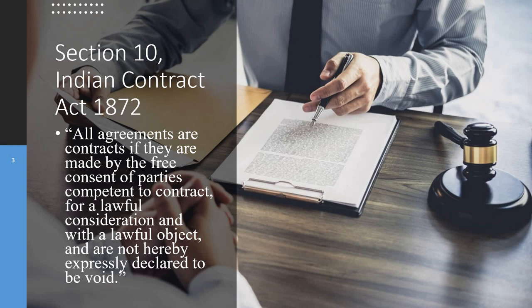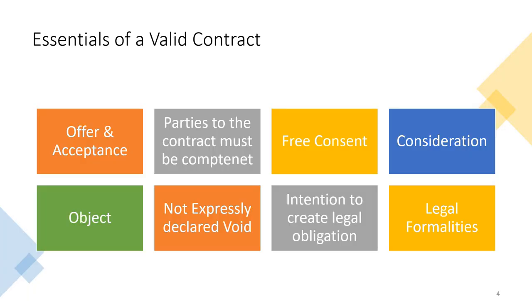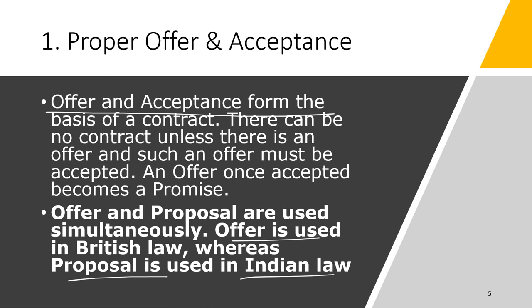What are the basic requirements that make a contract valid in the eyes of law? Number one: all agreements are contracts, so first things first, anything to be qualified as a contract needs to be an agreement. And an agreement starts with an offer. The points we derive are: offer and acceptance, parties competent to contract, free consent of the parties, consideration, legal object, not expressly declared void, intention to create legal obligation, and certain legal formalities which are required to be fulfilled.